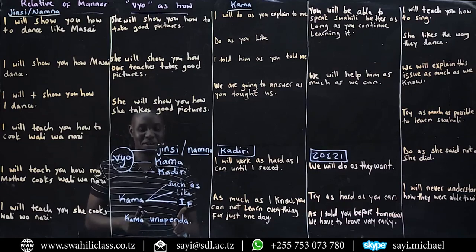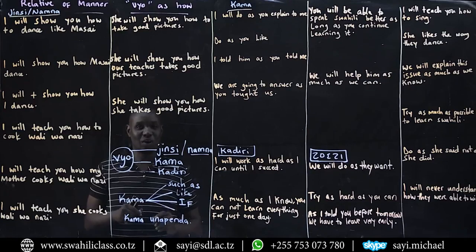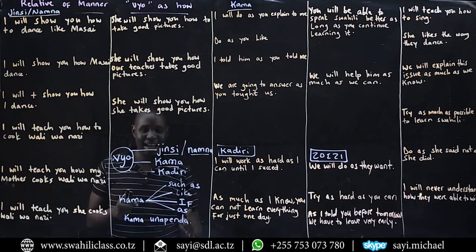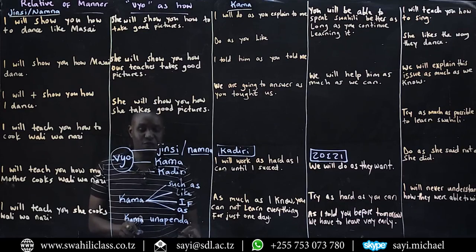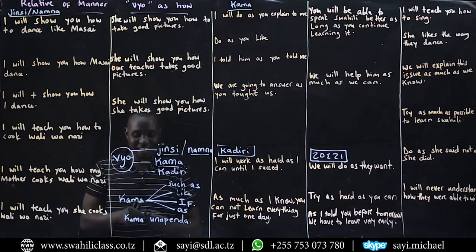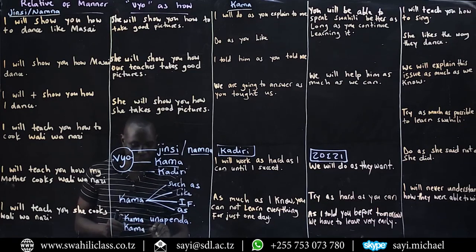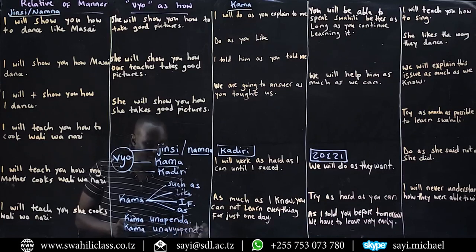So kama can be such as, like, or if. But also kama can be as — and that is what we are going to learn today. Kama will be as in a sentence once you have vio. This sentence does not have vio, so it means if. But once you have vio in this sentence, this kama becomes as.